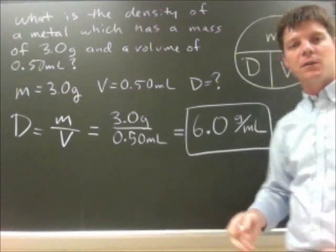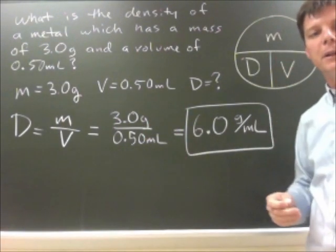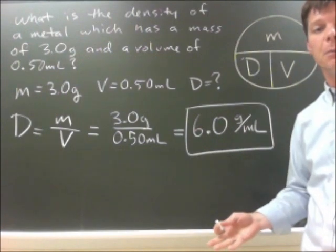So that is my final answer: 6.0 grams per milliliter is the density of this sample of metal.